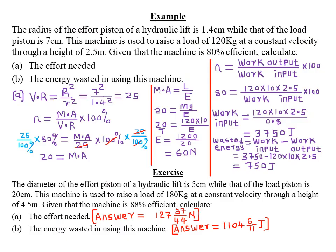Let's look at an example. The first question reads: the radius of the effort piston of a hydraulic lift is 1.4 centimeters, while that of the load piston is 7 centimeters. This machine is used to raise a load of 120 kilograms at a constant velocity through a height of 2.5 meters — remember, whenever we talk of vertical height, that is the load distance. The machine is 80 percent efficient.